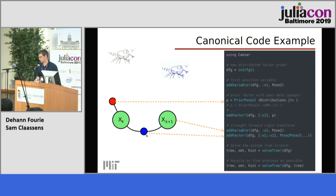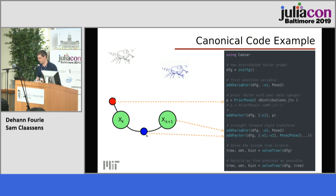One of the things that makes this algorithm special is recycling computations. You build a problem, solve it, change the problem slightly, and solve it again — which is a regular thing in robotics. Then you feed the tree structure back in and it will actually recycle computation accordingly.